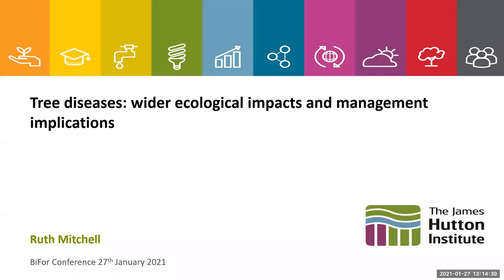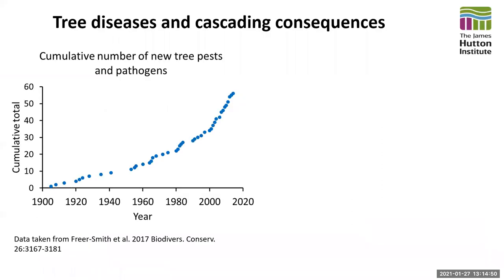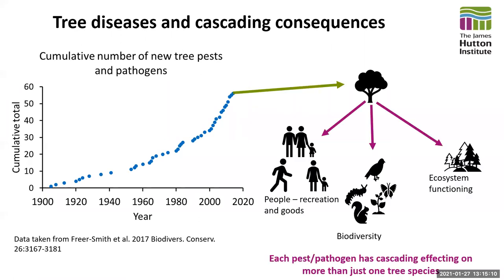Thank you for inviting me to talk this afternoon. Today I want to consider the wider ecological implications of tree diseases and their impacts on the wider environment. This graph shows the exponential increase in the cumulative total of new tree pests and pathogens since the 1900s, and each one of these pests or pathogens has the potential to have a significant impact on the health of our trees, but also to have a range of cascading effects. Most commonly discussed are the impacts on us as humans — the goods we receive from trees and woodlands. More rarely discussed are the impacts on biodiversity and ecosystem functioning, and it's these impacts that much of my work has been focused on in recent years.